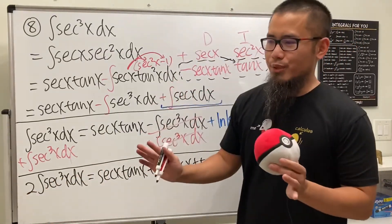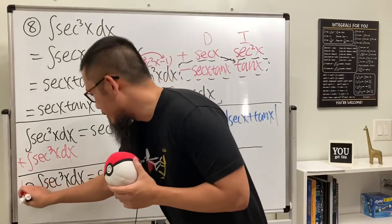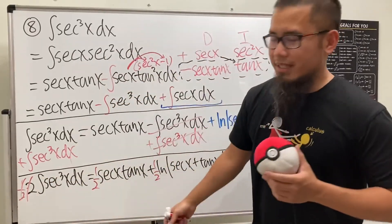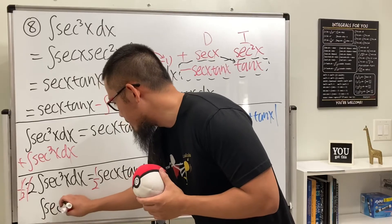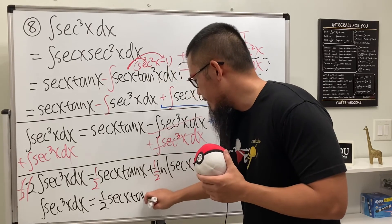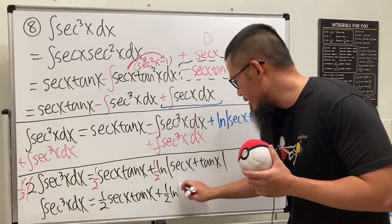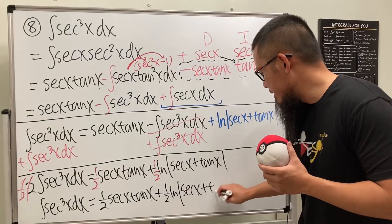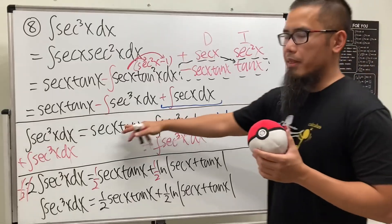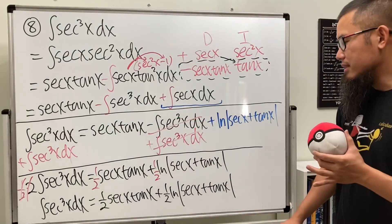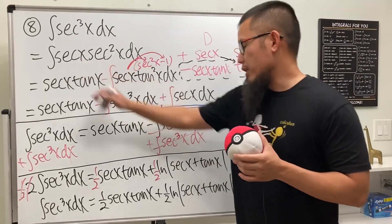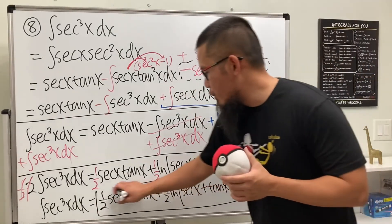We have a 2 on the left side, so we multiply everything by one half. Finally, the integral of secant³x dx equals (1/2) secant x tangent x plus (1/2) ln|secant x plus tangent x| plus C. The key trick is recognizing to use integration by parts and handling the repeating integral by moving it to the other side.